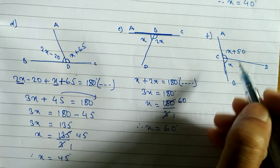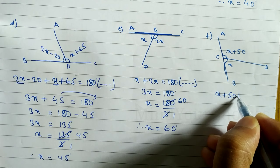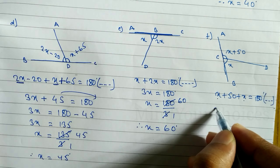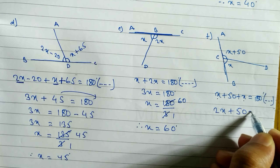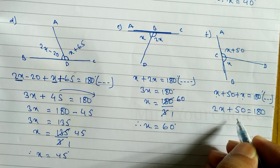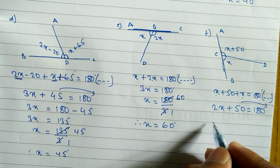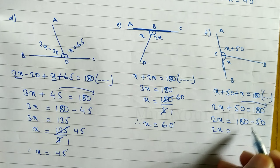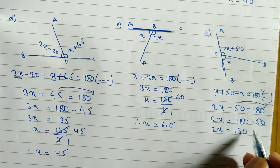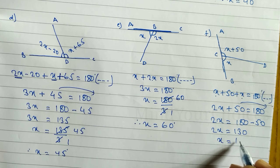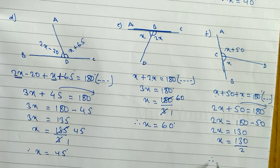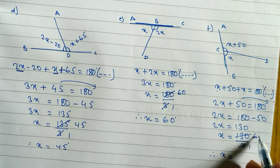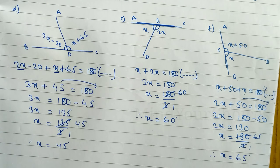In the next question, adding the two angles again gives 180 — being supplementary angle. So x plus 50 plus x equals 180. Combining like terms: 2x plus 50 equals 180. Taking 50 to the right side: 2x equals 180 minus 50, which is 130. Dividing by 2, the value of x equals 65 degrees.